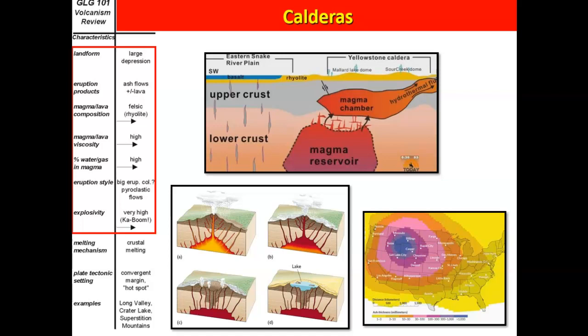For big felsic magma eruptions, we think about caldera-type eruptions — Yellowstone is the example. Yellowstone has a huge magma chamber underneath it with a largely felsic composition: super thick, lots of trapped gases. It has the potential for a massive eruption that could destroy volcanic features above it, eject thousands of cubic kilometers of material, cover large areas, and inject material into the atmosphere blocking sunlight — causing a volcanic winter.